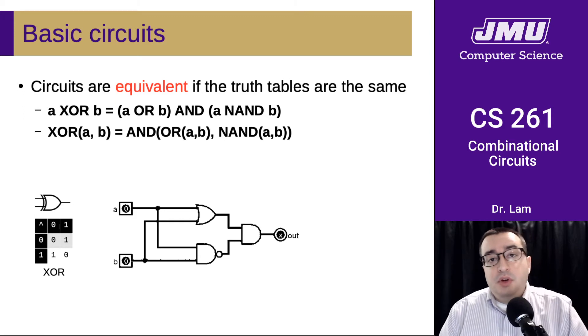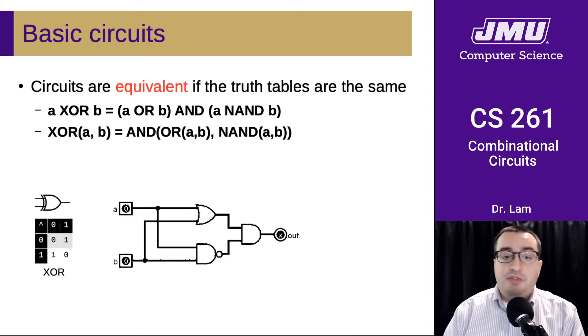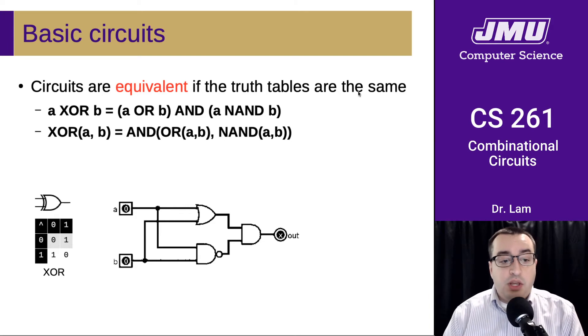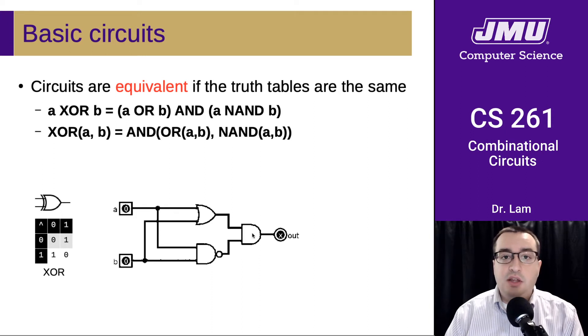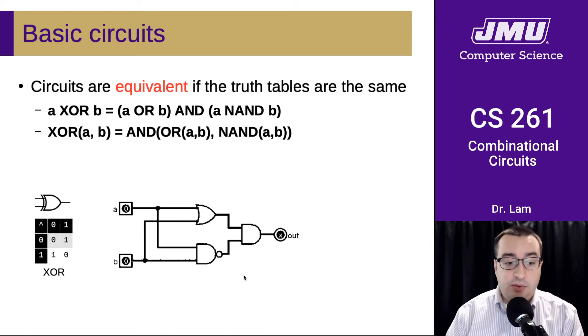So as I've alluded to, circuits are equivalent if their truth tables are the same. And so here is an XOR gate. And here is a circuit that I am asserting is equivalent to an XOR gate. You'll notice that this circuit is built without using any XOR gates.